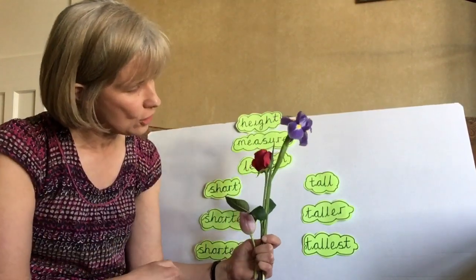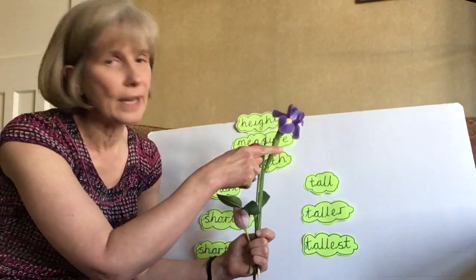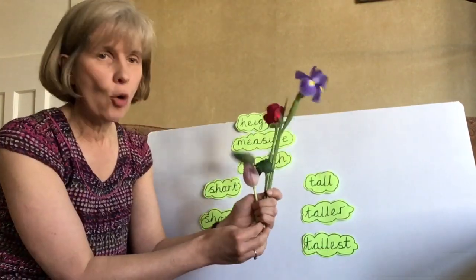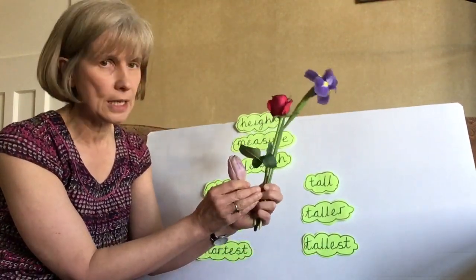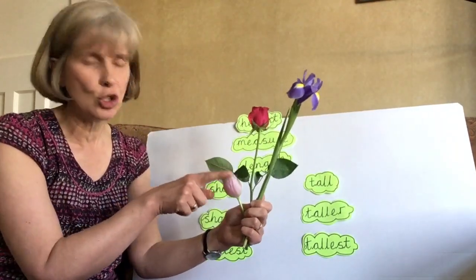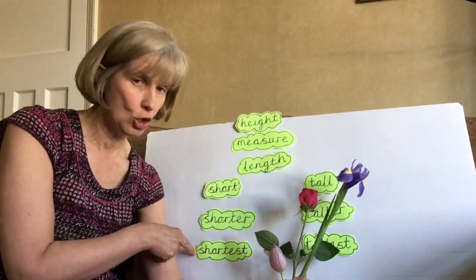Which one is the tallest? You're right. It's the iris. That's the tallest. Which one is the shortest? Can you see? That's right. It's the tulip. The tulip is the shortest.